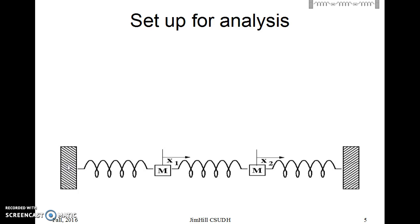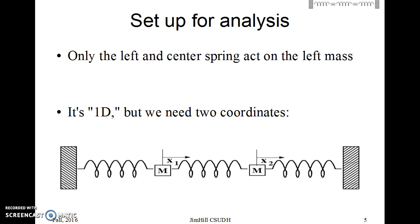So we want to set up to do some analysis. I've already drawn the coordinates I'm going to use there. The x-coordinate seems obvious, and there are two things. So even though it's 1D, I need two coordinates, one for the first mass, one for the second mass. Now, on the left mass, the one with the coordinate x1, only the springs attached to it actually exert forces on it. Of course, what the other spring is doing matters in some sense, but it doesn't directly exert a force on it. The same is true for the other mass.